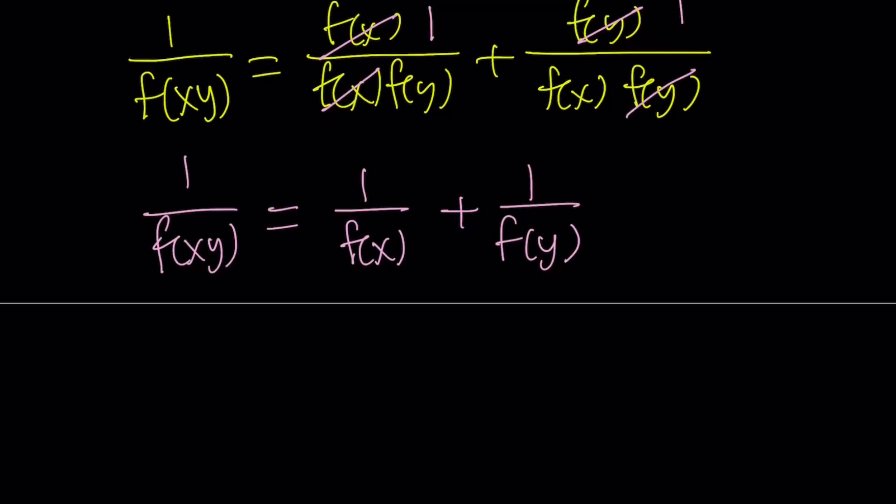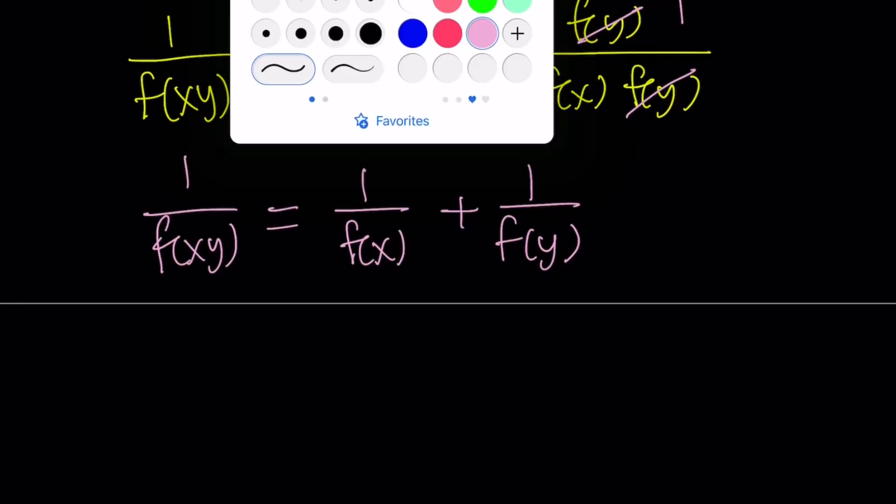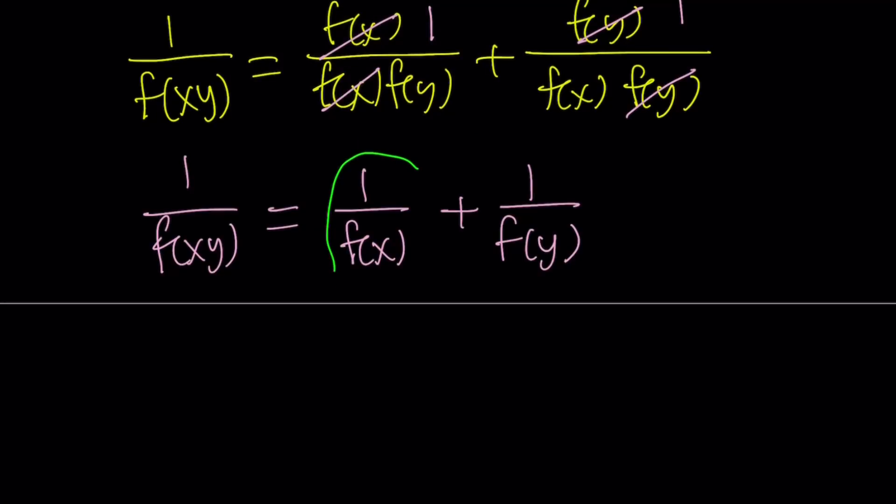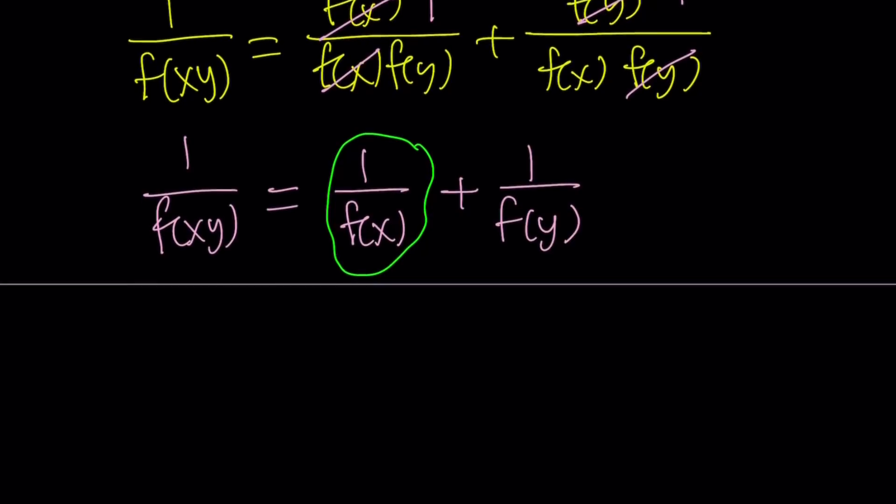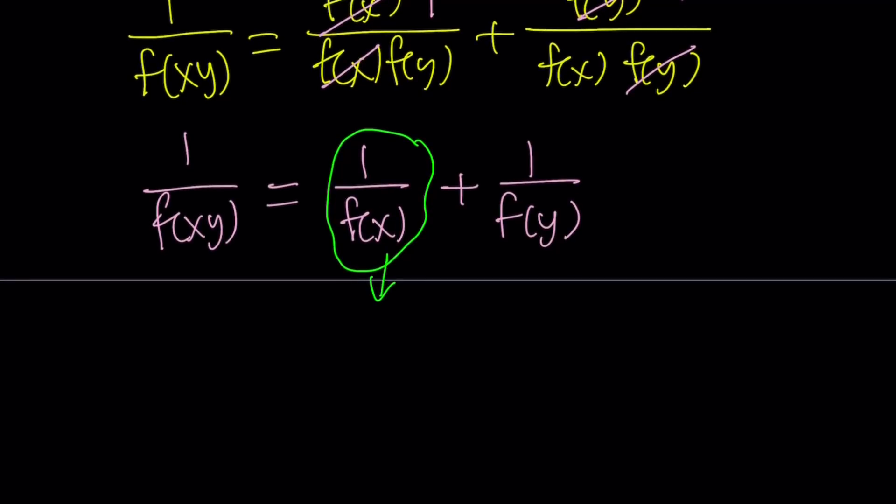So why is this equation a good thing? It is a good thing because we know how to solve f of xy equals f of x plus f of y. Well, it's not quite the same, but it's just reciprocals. So that reciprocal should give you an idea, because wouldn't that be awesome if you could turn this into like a function, not 1 over something, but just like the function itself?